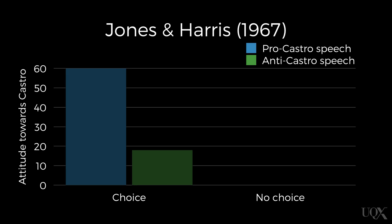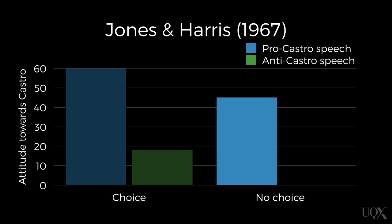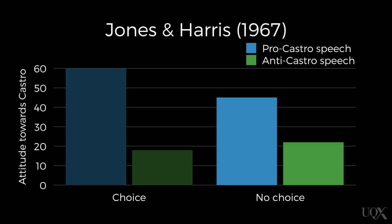Now let's look at the no choice condition, where the student speechwriters did not get to choose which side of the argument they wrote about, either pro or anti Castro. Our participants make the same person attribution — they see those speechwriters writing pro Castro speeches as having more positive attitudes to Castro compared to those speechwriters writing anti Castro speeches, even though they had no choice in the topic they wrote about. If we were being completely rational, we should not make any inference about the speechwriter's attitudes in the no choice condition, regardless of the topic they wrote about. Essentially, the participants ignored the situational constraints on the speechwriter's behaviour and still made a person attribution. This is the fundamental attribution error in action.